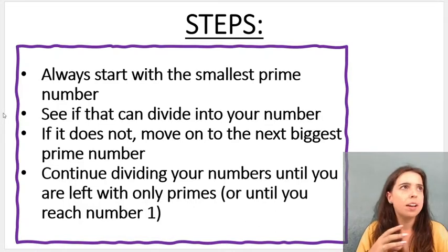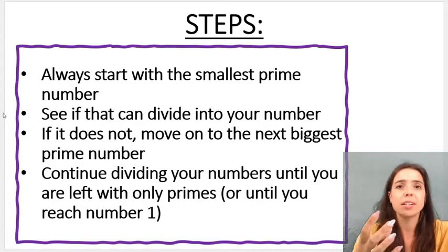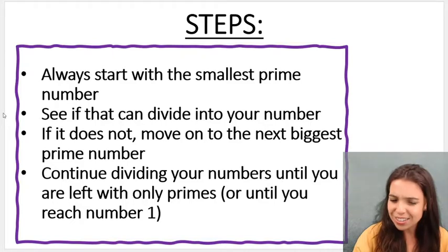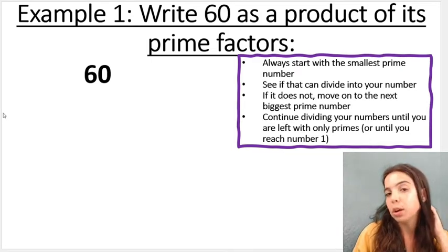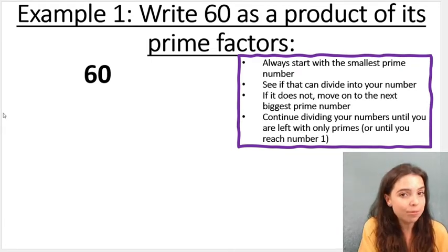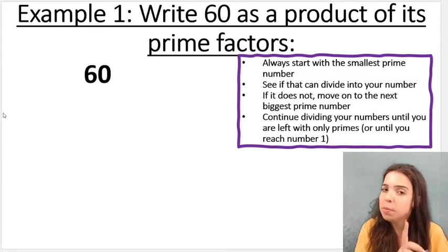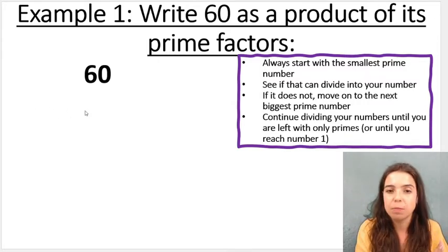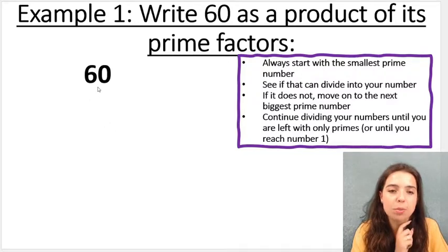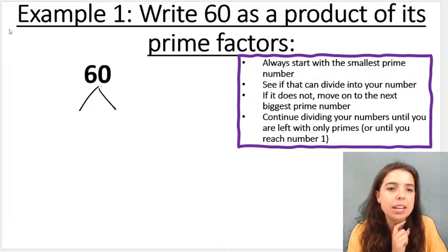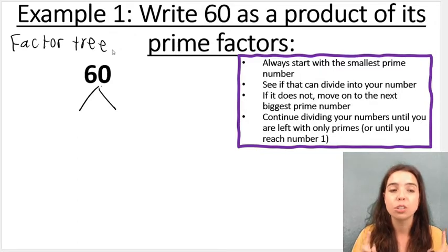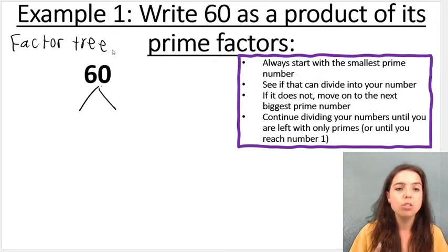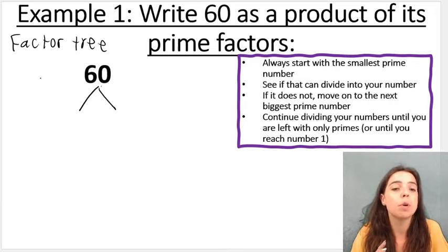If a certain number doesn't divide into it, you move to the next number. I'm going to do 60 first, and for the first two examples I'm going to be doing both the factor tree and the factor ladder — remember, they both do the same thing. So starting with 60, you always start with the smallest prime. I'm going to do two branches like this. This that I'm doing is the factor tree, in order to write 60 as a product of its prime factors. Remember, product means multiply. So you start with the smallest prime number, which is two.